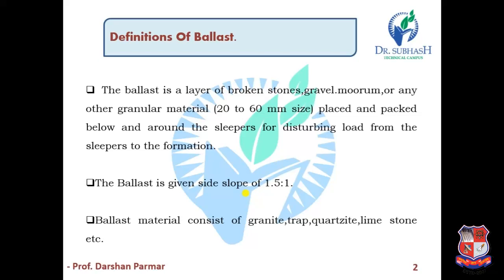To recap, ballast is broken stone, gravel, or different granular materials such as stones, gravel, muram, or other granular material. It is 20 to 60 mm in size and is packed below and around the sleepers.